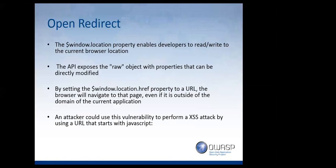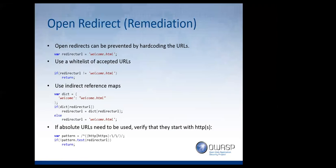There's also the open redirect issue. The $window service has the ability to access location, letting you define the href of where you want to go — developers can read and write the current browser's location. The $location API is a raw object that can be modified directly, and an attacker can abuse this by adding a JavaScript URI or redirecting to attacker.com or evil.com. The fix is to use a hard-coded URL, add a whitelist of accepted URLs, or — my personal favorite — use indirect reference maps: define keys like 'welcome' or 'home', and reject anything not in the dictionary. For absolute URLs, validate the scheme with a pattern.